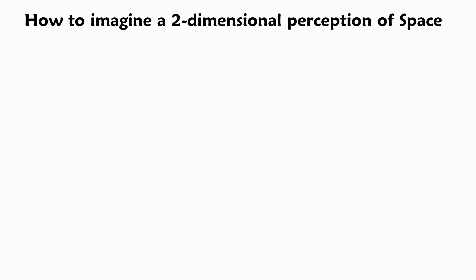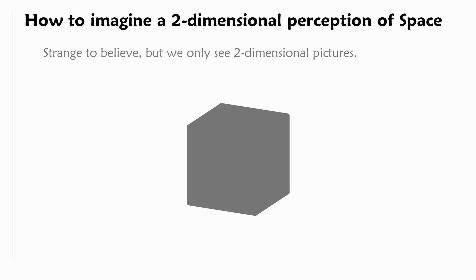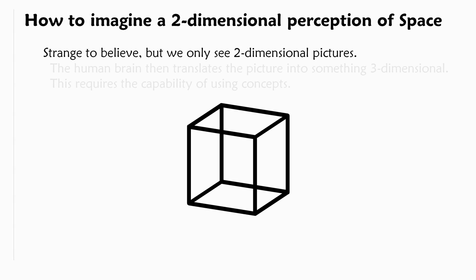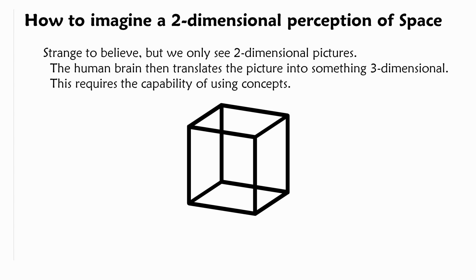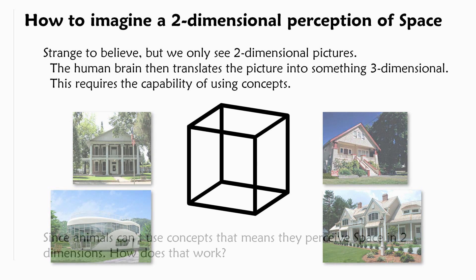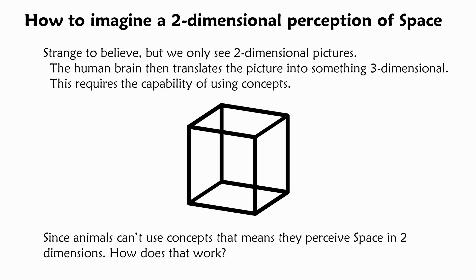Let's try to imagine a two dimensional perception of space, which is important to be understood for the next steps. Strange to believe, but we humans only see two dimensional pictures all the time with our eyes. And then the human brain translates the picture into something three dimensional. This translation requires the capability of using concepts. A concept for example is to say house without referring to a special house, but just the concept of a house. For us, every picture shows a house, but animals can't use concepts, which is why each picture shows something completely different to them. This means that animals perceive space in two dimensions.